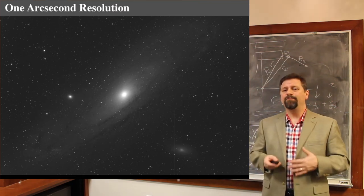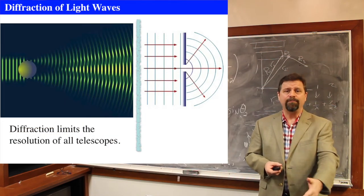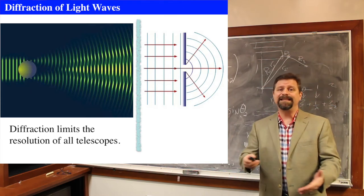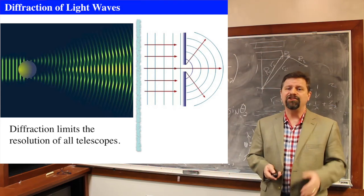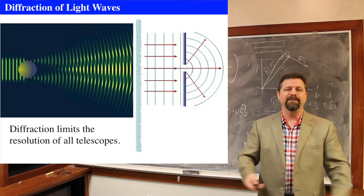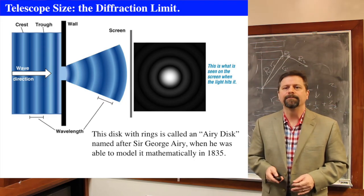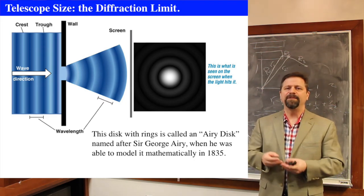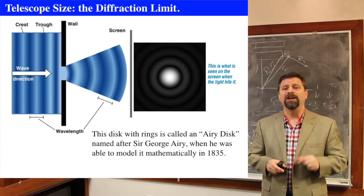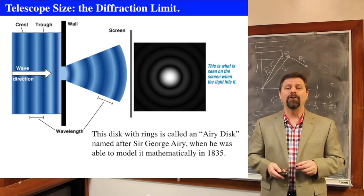That resolution improvement happens because as light enters an aperture, it diffracts. The larger your aperture, the less the effect of diffraction. But diffraction limits the resolution of all telescopes — it doesn't matter whether it's the Hubble Space Telescope, a big telescope, or a small telescope; diffraction is the fundamental limit. With a circular aperture, you get rings around an object — a bright central peak surrounded by rings called Airy disks.